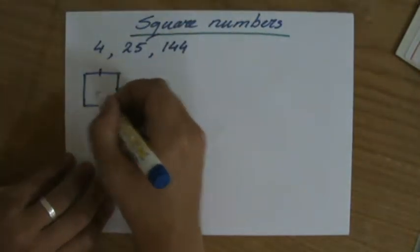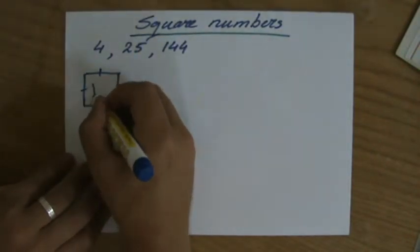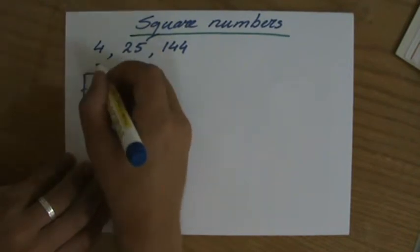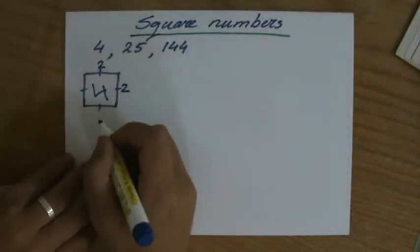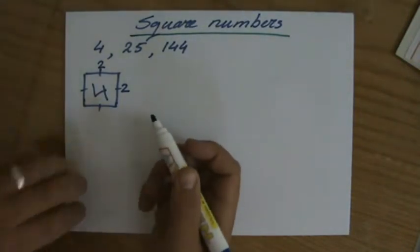The square number is the area of that square. So 2 times 2 is going to give you 4. That makes 4 a square number.